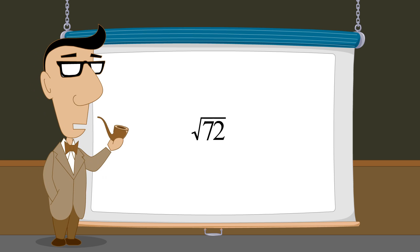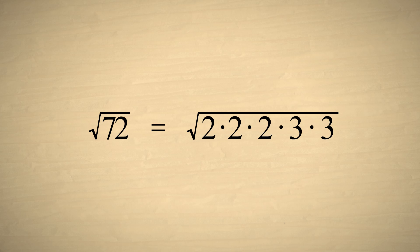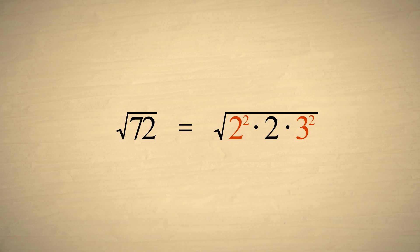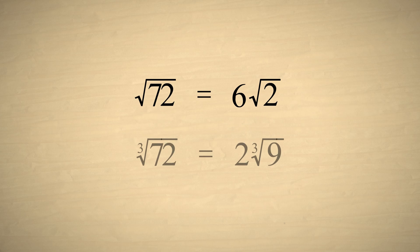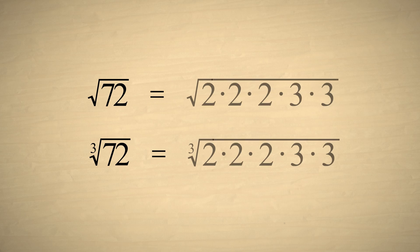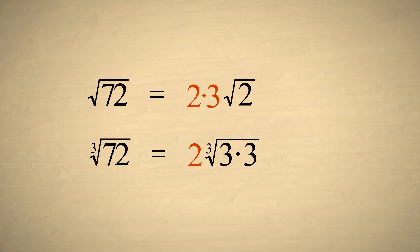On the other hand, let's simplify the square root of 72. Once again, factoring 72, we see that 2 squared and 3 squared are both factors. So these two factors can be brought out from under the square root, and we have 6 times the square root of 2. So the square root of 72 can be written as 6 times the square root of 2, and the cube root of 72 can be written as 2 times the cube root of 9. In both cases, we factored 72 and then grouped the factors into products which were perfect squares or perfect cubes, and therefore could be brought out from under the cube root or square root radical signs.